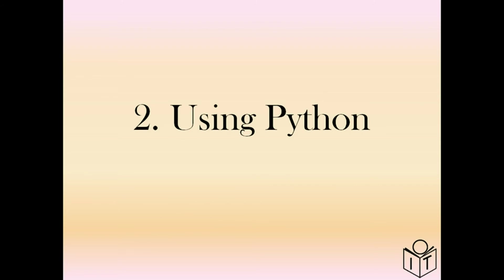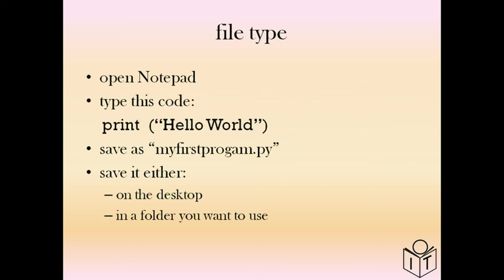Now let's look at actually using Python. For example, the 'print hello world' code — how do you actually run that? You can use Notepad on your computer. Open it, type in the code: print with 'hello world' in brackets. When you save that file, make sure you name it with the ending .py — not .txt. A .txt is a text file; you want a Python file, so it's very important you finish with .py.